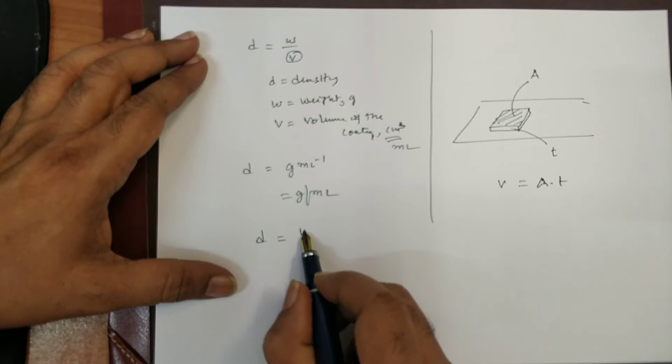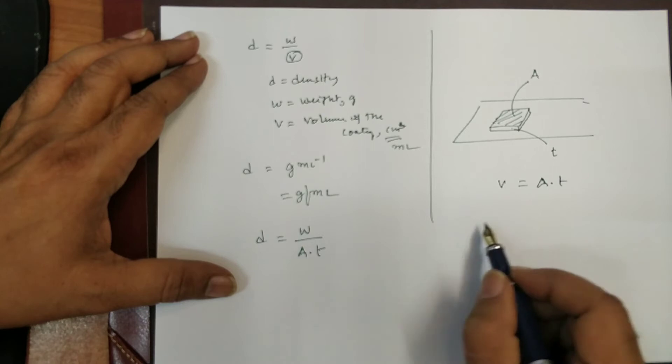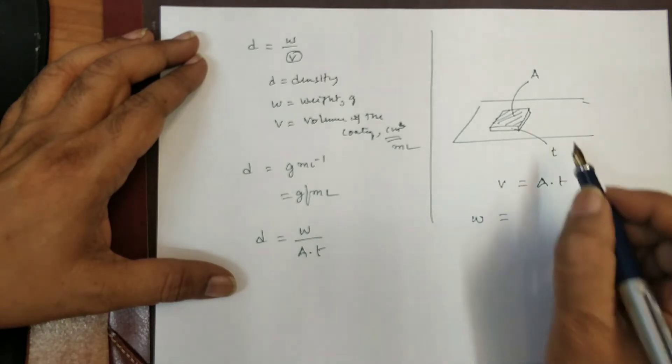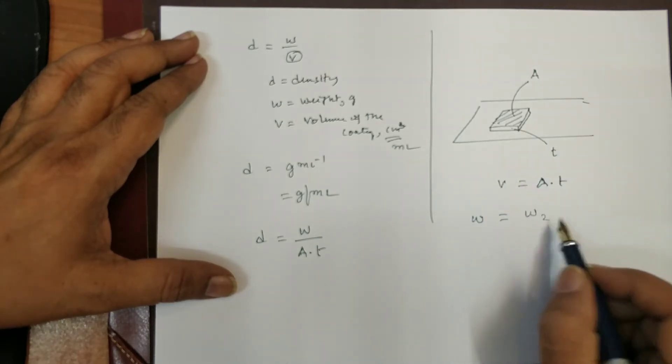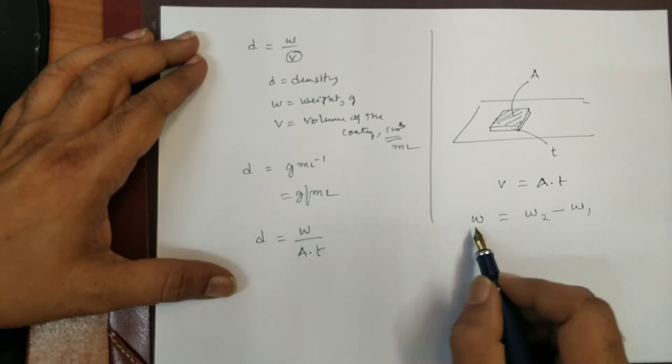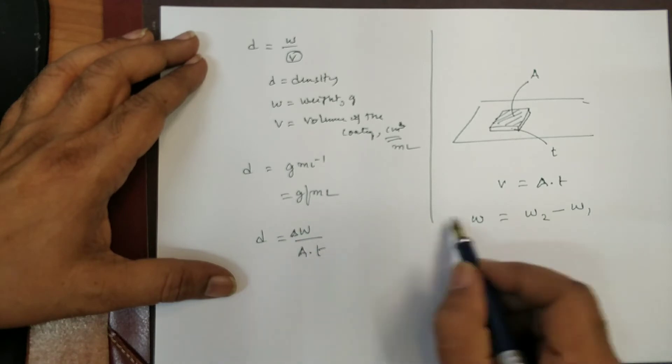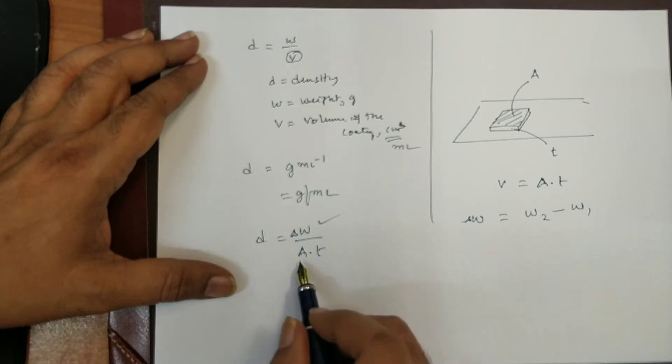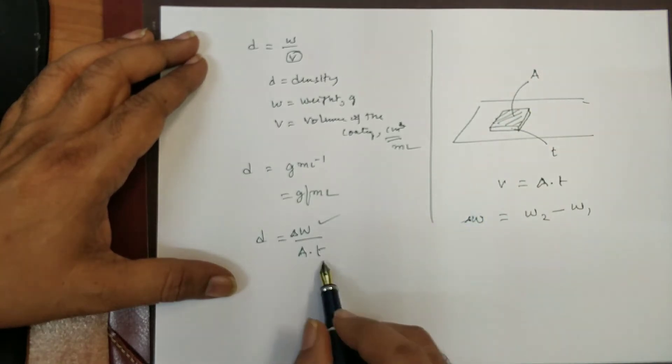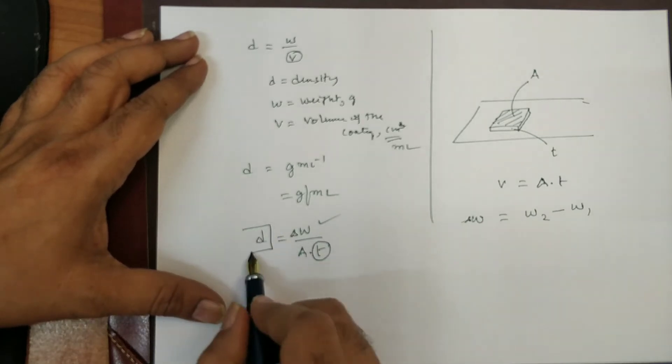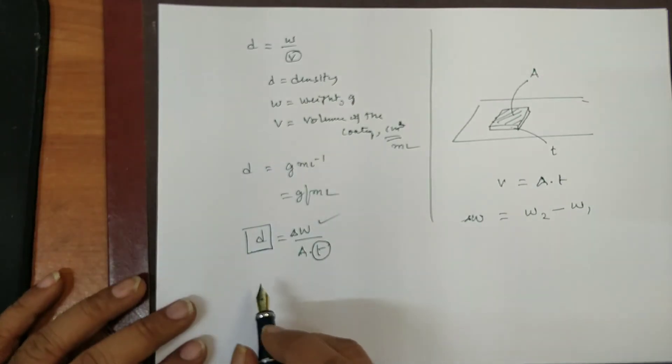Therefore, D is equal to the coating weight divided by A into T. So, I have already analyzed the coating weight as W which is nothing but that is I have weighed the coated panel as W2 and without after stripping it is W1. So, the difference in weight is W. That is you can even call it delta W, difference in weight.